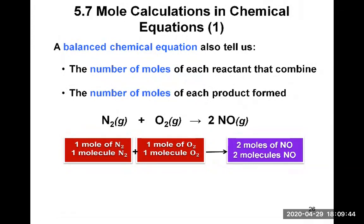This video will start and complete section 5.7, which covers mole calculations in chemical equations. We've learned how to write balanced chemical equations, which are like recipes for chemical reactions. The information we get from a balanced chemical equation is the number of moles of each reactant that combine and the number of moles of each product formed.